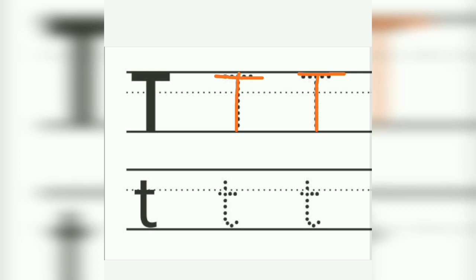Now we will write small letter T. We will write from up to down and left to right. Up to down and hook, sleeping line, T. Again, up to down and hook, sleeping line, T. This is capital T, small t. This is letter T tracing.